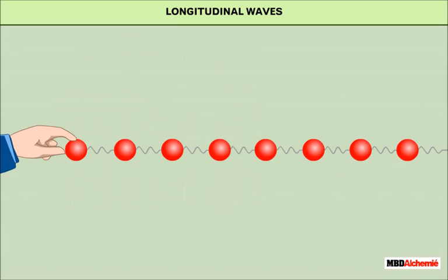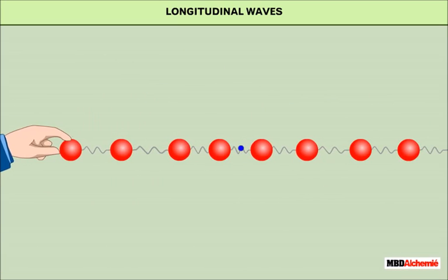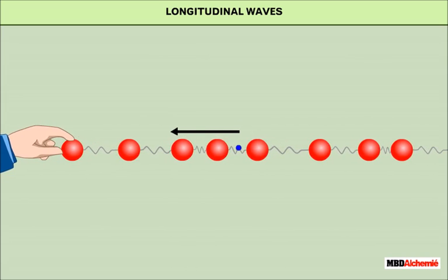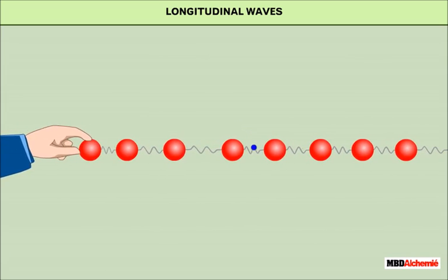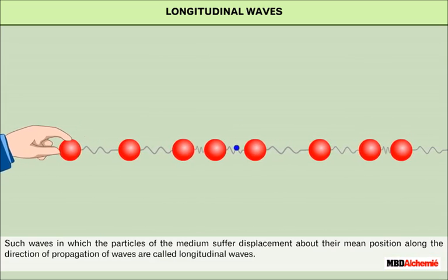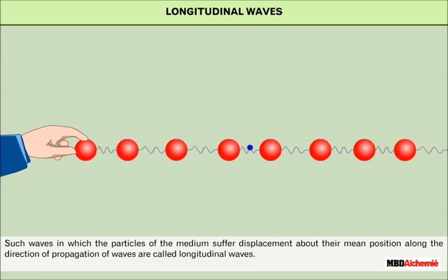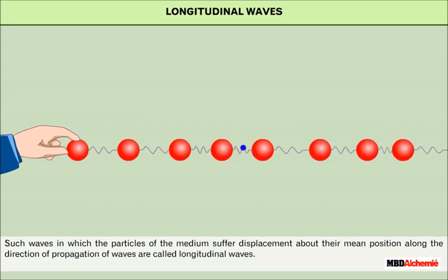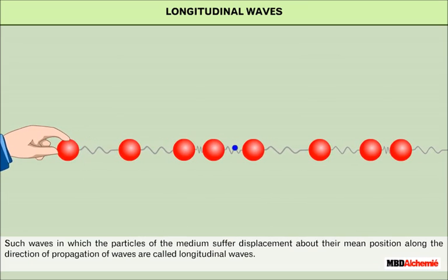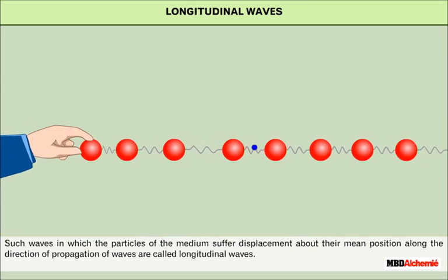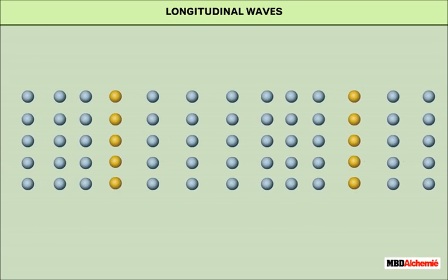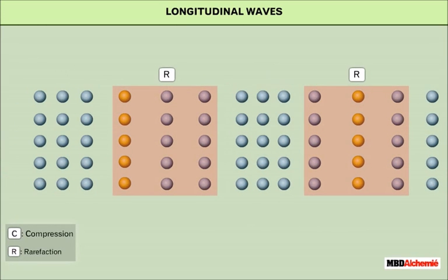Let us mark a point on the spring and observe its motion. You will observe the point moving left and right. Such waves in which the particles of the medium suffer displacement about their mean position along the direction of propagation of waves are called longitudinal waves. These waves travel in the form of compression and rarefaction.